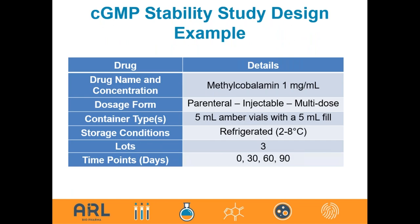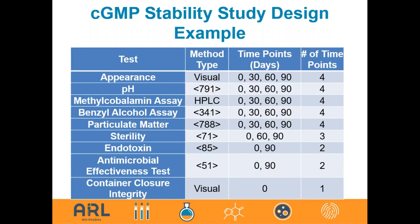A CGMP stability study design example for methylcobalamin 1 mg/mL parenteral injectable multi-dose in an amber vial with 5 mL fill, stored under refrigerated conditions, requires three lots for a 503B study. Testing is conducted at time zero, 30, 60, and 90 days. Tests include methylcobalamin assay, particulate matter, benzyl alcohol preservative assay by GC, sterility, endotoxin, antimicrobial effectiveness per USP 51 at beginning and end, and container closure integrity. These real-life examples demonstrate study design for both 503A and 503B applications, and compounders are encouraged to work with their laboratory partner for assistance in designing appropriate stability programs.